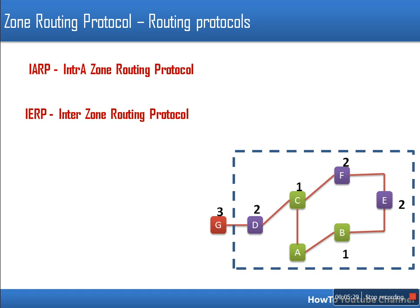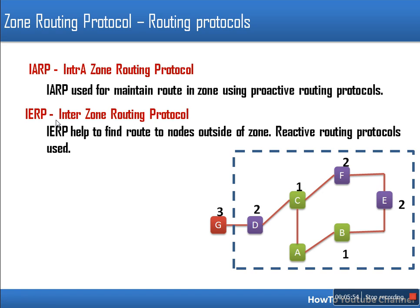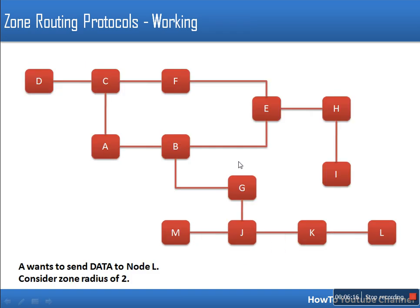For every node a zone is specified, and inside that zone only the proactive routing protocol is used — every node has a route to every other node inside the zone. This is termed Intra-Zone Routing Protocol. Outside the zone, the Inter-Zone Routing Protocol is used, which relies on reactive routing. For example, if node A wants to send to node G, inter-zone routing protocol is used.